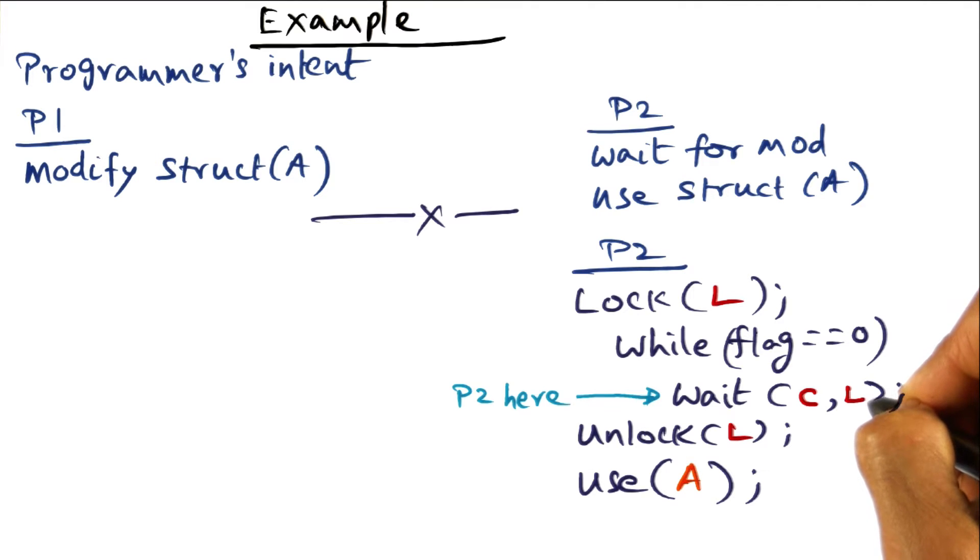The semantic you know is that at this point thread P2 is blocked here, the lock is released, and he's basically waiting for a signal on this condition variable C.